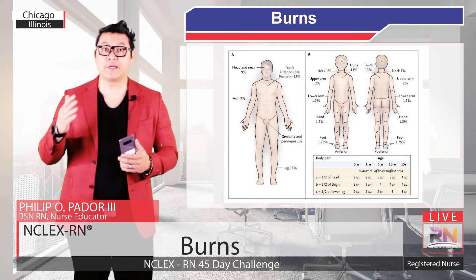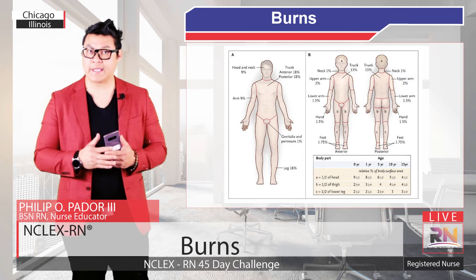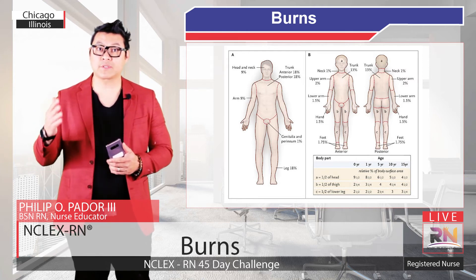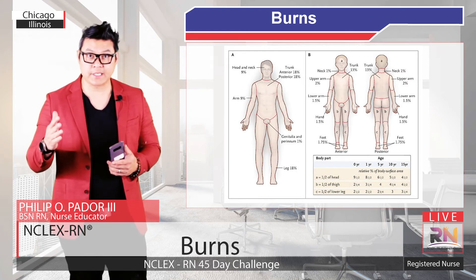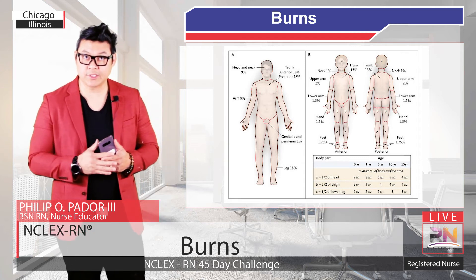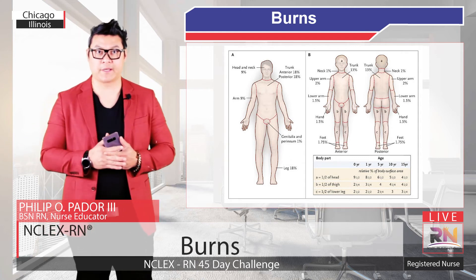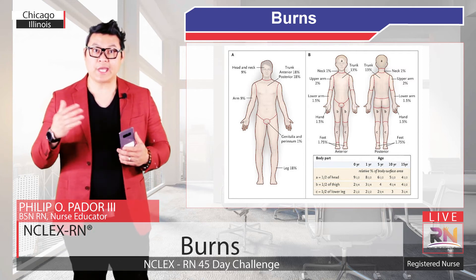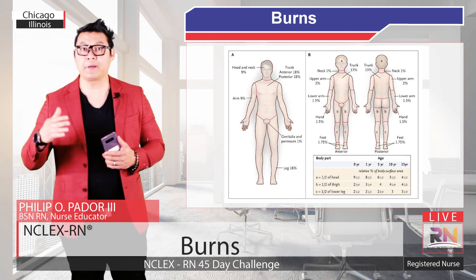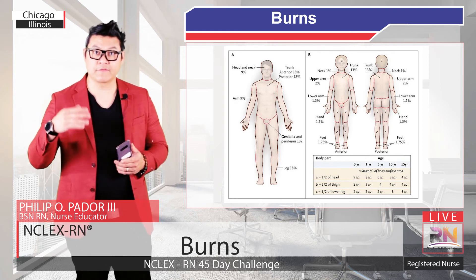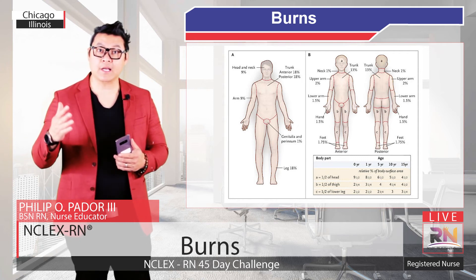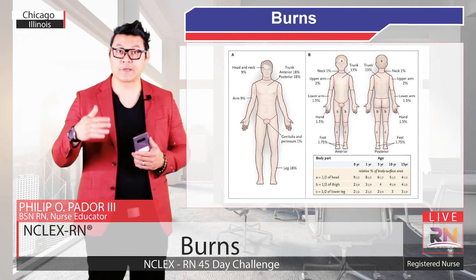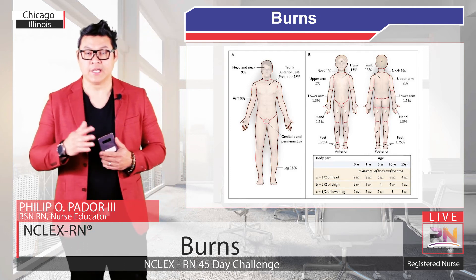In adults, the severity of burns is calculated using the rule of nines. This evaluates several distinct sections of the body's total surface area for the presence and degree of burns. Eleven sections each make up 9% of the surface area: the head, right arm, left arm, chest, abdomen, upper back, lower back, front of the left leg, back of the left leg, and the same for the right leg. The groin accounts for the remaining 1% of the body's surface area.